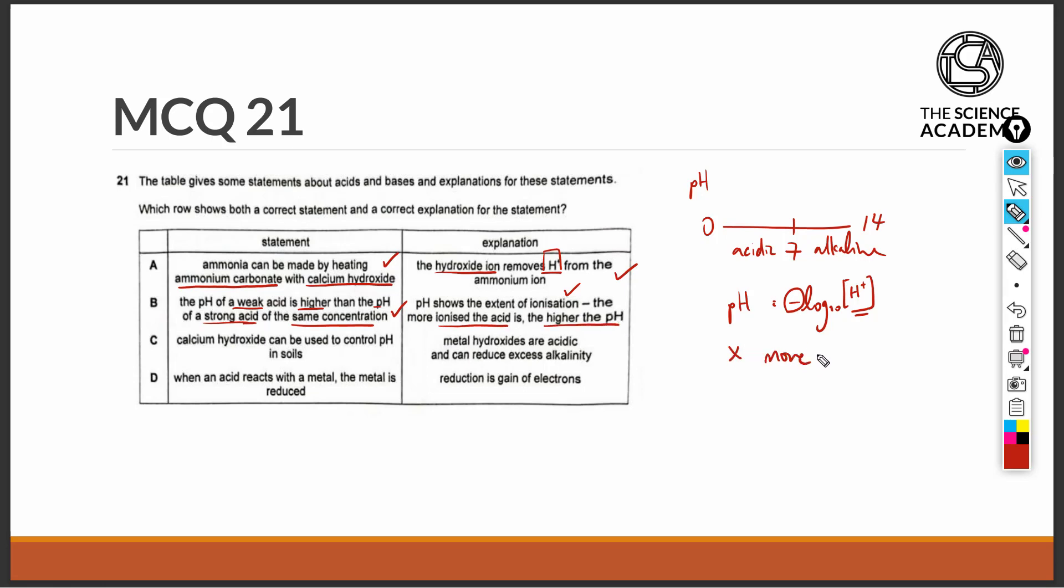The more ionized an acid is, meaning let's represent an acid as HA, being ionized means it ionizes into the H+ and the A- ions. The more ionized it is, the more of the ion products we will get. And the more hydrogen ions we get, the lower the pH. So this statement is wrong in the sense that the more ionized the acid is, the lower should be the pH instead of higher.